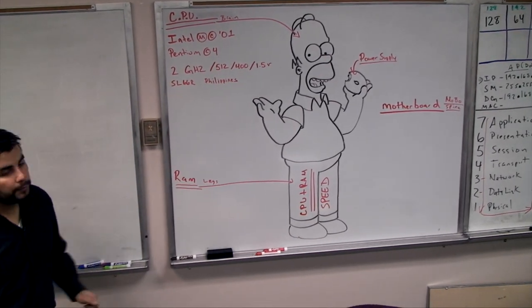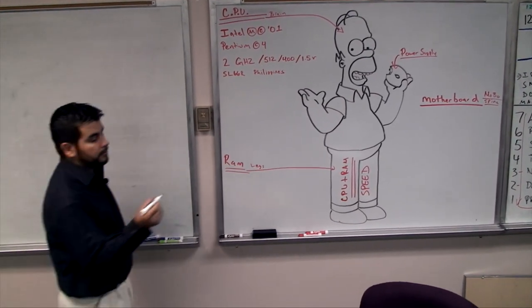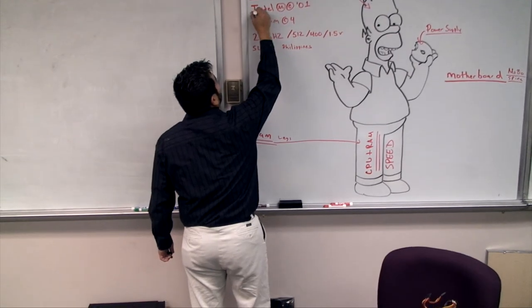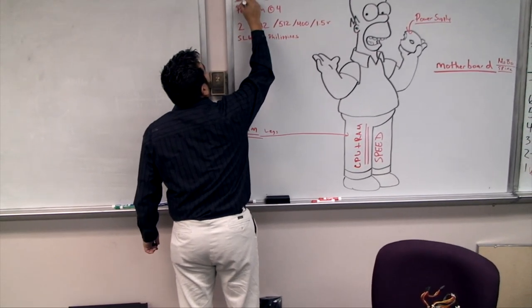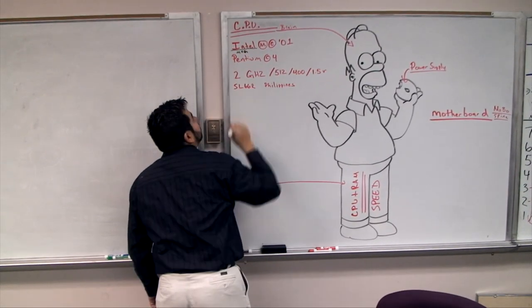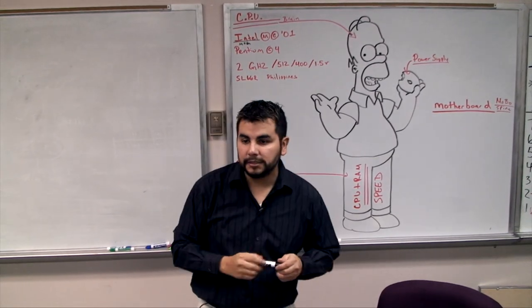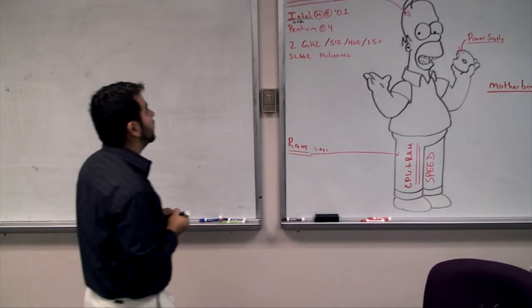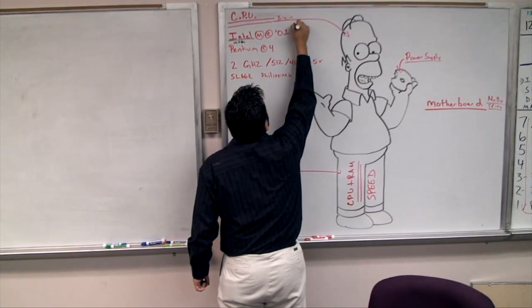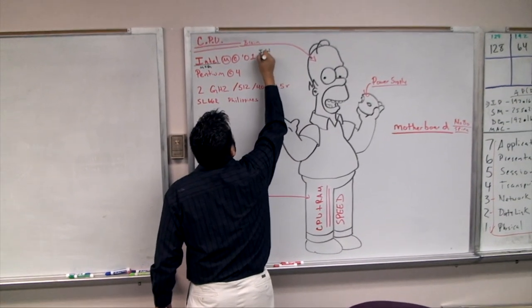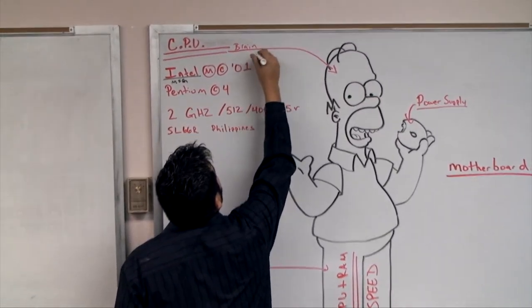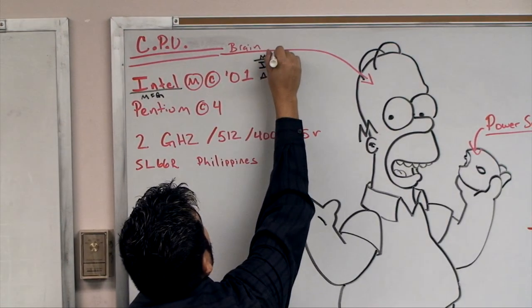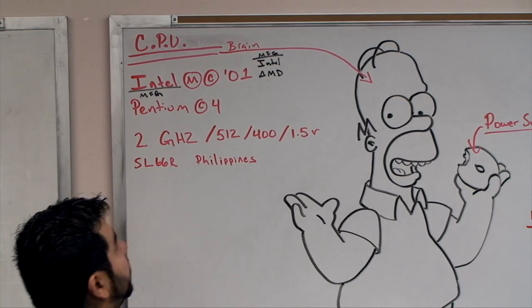All right, so first we've got Intel. Can anybody tell me what Intel is or what they think it is? Manufacturer, that's right. This is your MFG - this is the company that made this piece, this part. There's two real big main manufacturers: there's Intel and AMD. Those are the big boys. There's a couple others, but these are the big main ones.